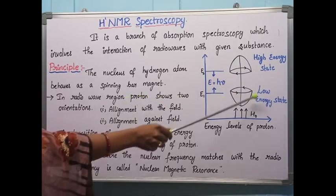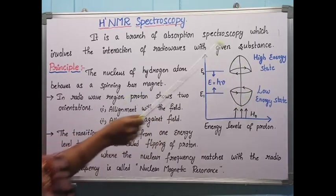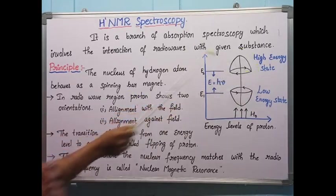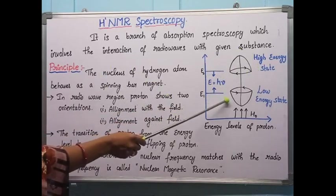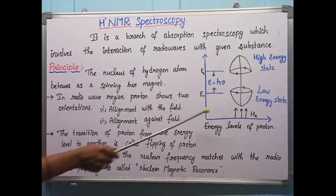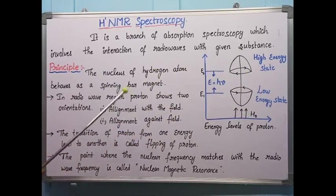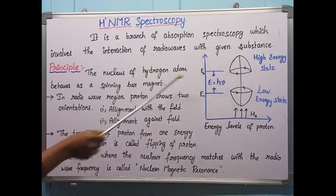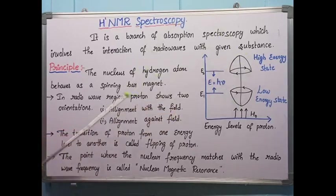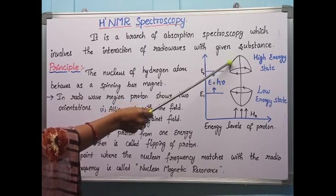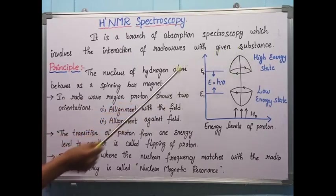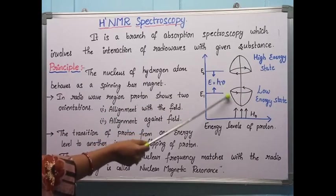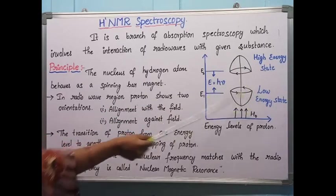The first orientation is alignment with the field — same alignment as the external field — and the second is opposed alignment with the external field. At the beginning the proton is at low energy and shows alignment with the external field. After absorbing energy it moves to the next energy level, showing opposed alignment, where it is in a higher excited state and is unstable.